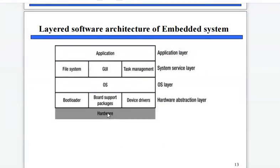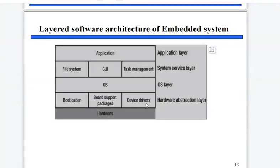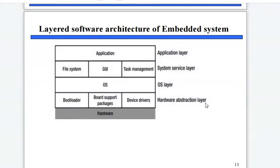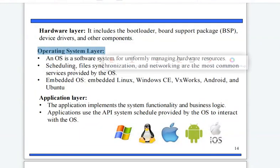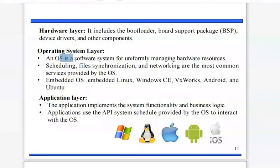In sophisticated embedded systems, a real-time operating system is also used. The figure shows the layered software architecture of embedded systems. At the bottom is the hardware layer; on top of that is the hardware abstraction layer, which consists of a bootloader, board support packages, and device drivers. Then there is the OS layer, followed by a system service layer which consists of the file system. At the top is the application layer.